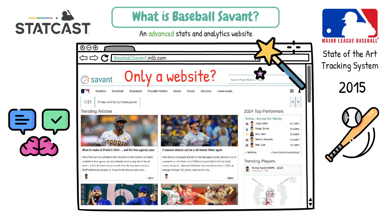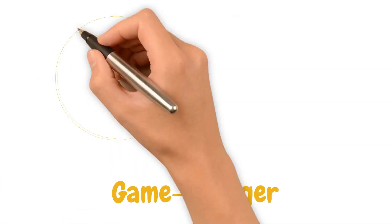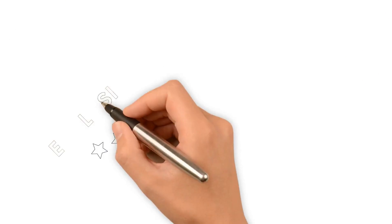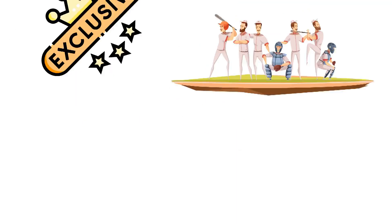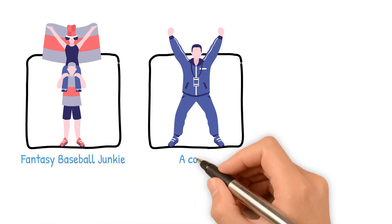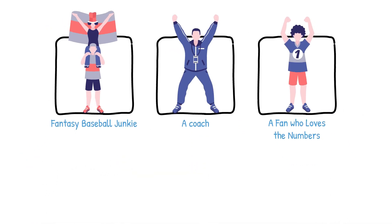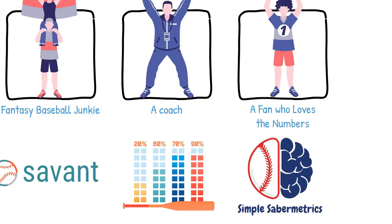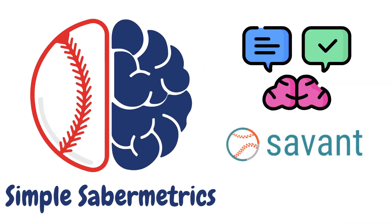Baseball Savant isn't just a website — it's a game changer for baseball analysis. From identifying breakout stars to predicting slumps, it gives you the tools that were once only available to Major League Baseball teams. Whether you're a fantasy baseball junkie, a coach, or just a fan who loves numbers, Baseball Savant helps you see the game in a whole new way. And Simple Sabermetrics is here to help you understand all of that detailed information you can gather from advanced sites like these, all in one place.